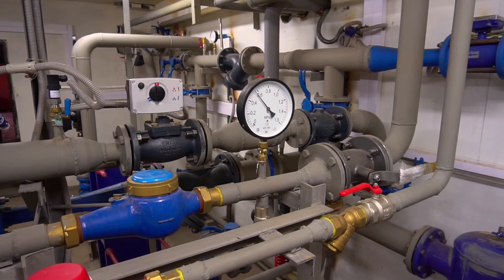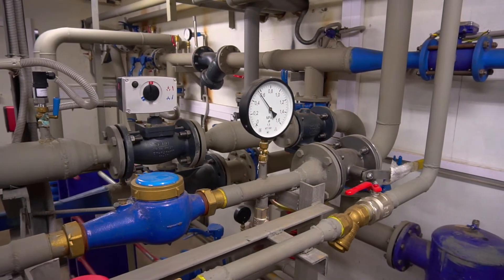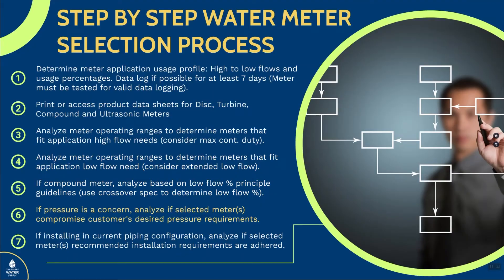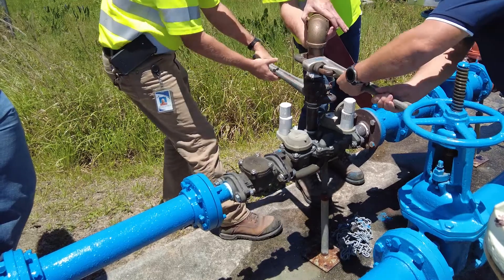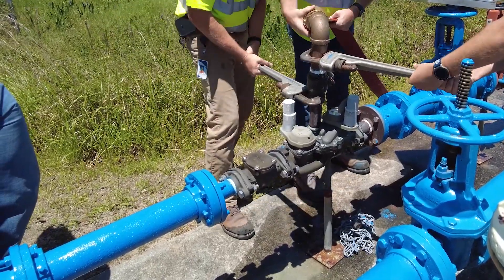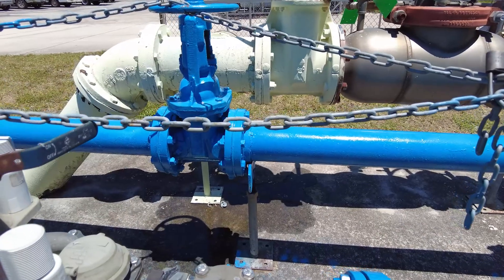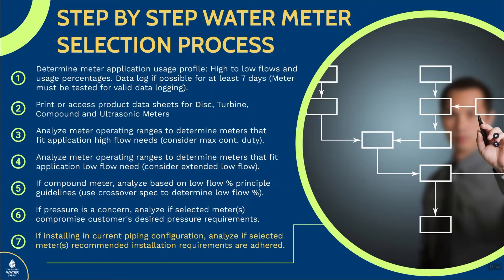Point six doesn't always come into play, but pressure could be a factor. If the customer needs a particular pressure on their side of the meter, you're going to have different pressure drops with different types of meters, and that might guide you to one meter versus another because it has a lower pressure drop — that's always part of the product data sheets. Lastly, if you're installing in a current piping configuration, you might be constrained — you might not have the right amount of straight pipe, or there's a valve you can't move, and that might gear you towards a particular meter as well.